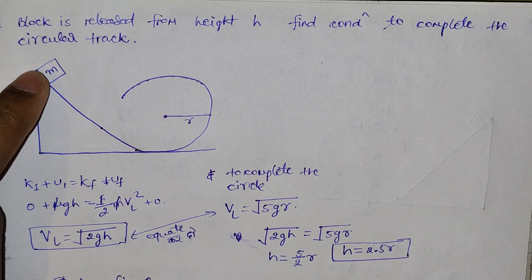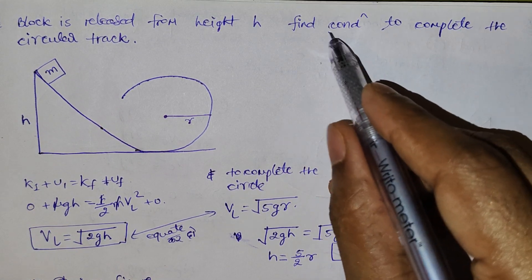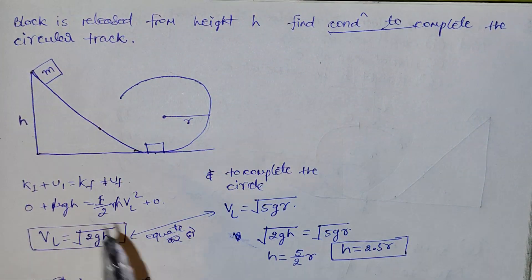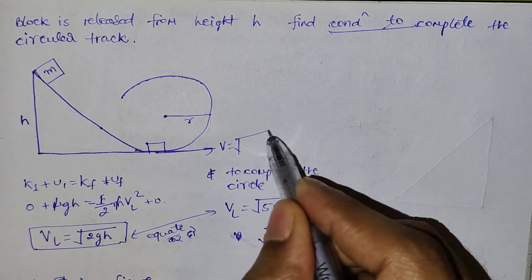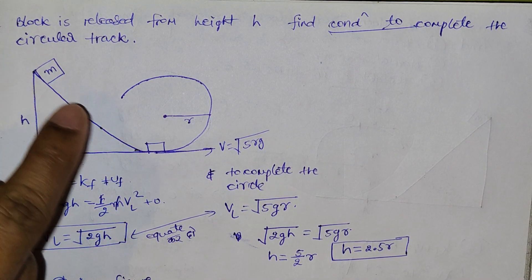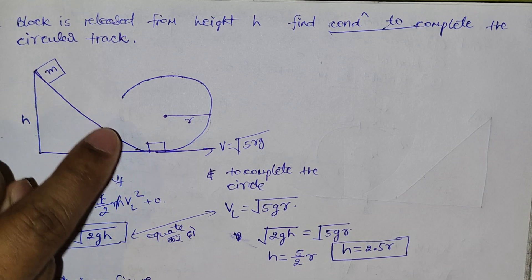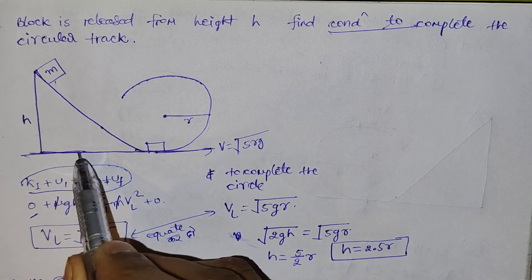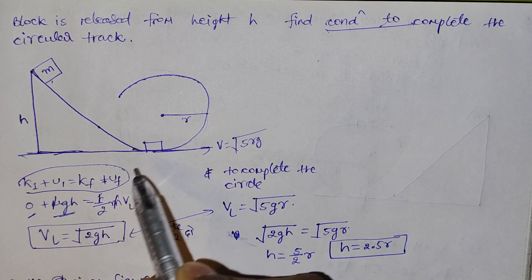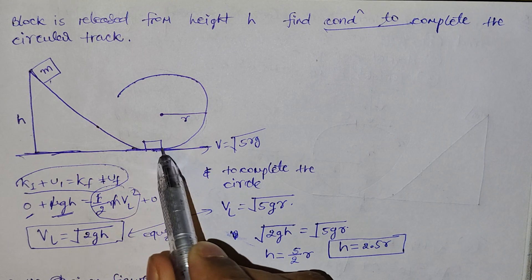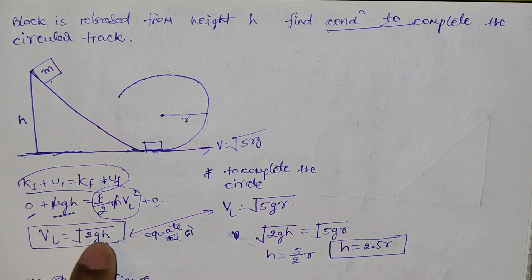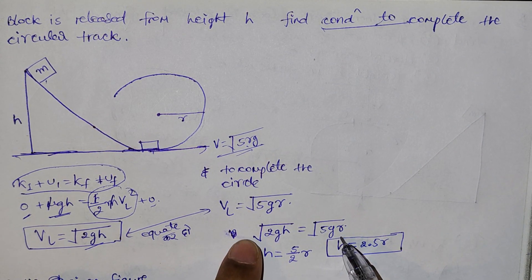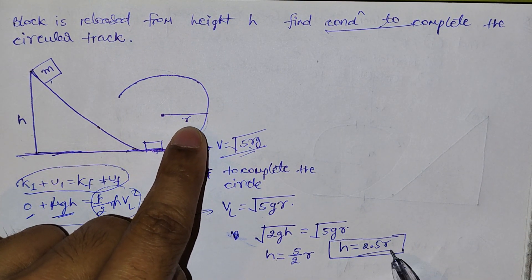Next question: a block is released from height h. Find the condition to complete the circular track. The particle needs velocity root(5rg) at the bottom to complete the circle. Apply conservation of mechanical energy from height h to the lowest point: initial KE = 0, initial PE = mgh, final KE = (1/2)mv², final PE = 0. Lowest point velocity = root(2gh). Equate root(2gh) = root(5rg) to get the relation between h and radius r.